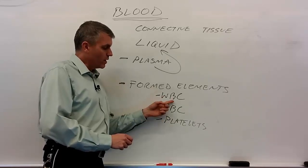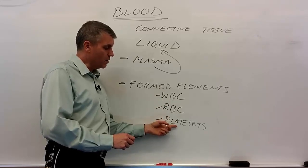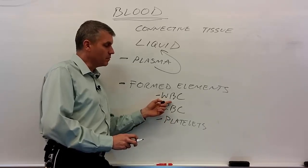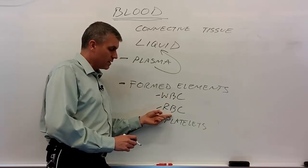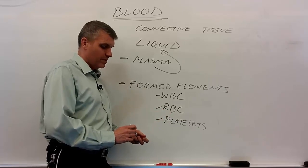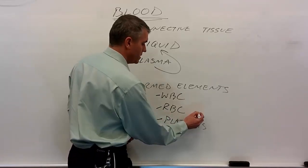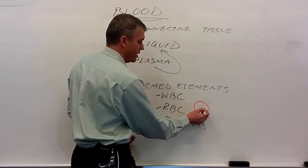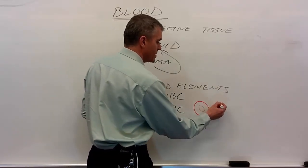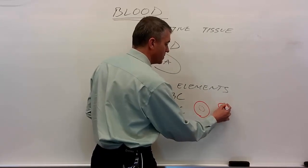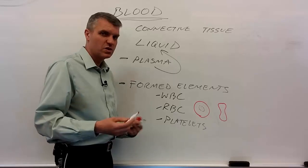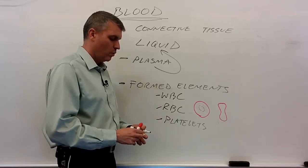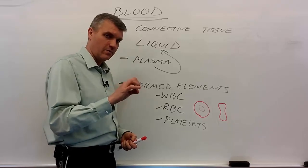In terms of size, white blood cells are the largest, platelets are the smallest, and red blood cells fall in between. In terms of shape, white blood cells in the bloodstream tend to be rounded. Red blood cells have a very distinctive shape — biconcave. When viewed flat, you see a round cell with a lighter area or dimpling in the middle; turned sideways, it's concave on both sides. Platelets, when not activated, are just little rounded pieces.